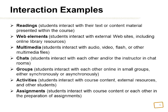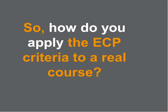Here are some examples of how we can implement interaction within an online course: readings, certain web elements, having students visit websites, even their own online library. Certainly multimedia tools and objects, chats, groups, activities that cause students to interact with each other, external resources, and of course assignments. All of that comes into play with examples of applying the rubric criteria.